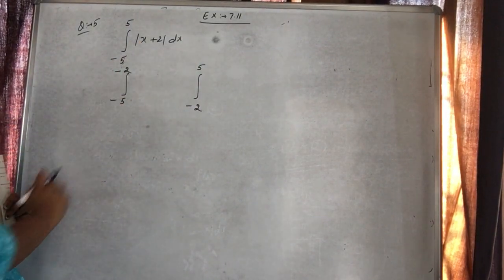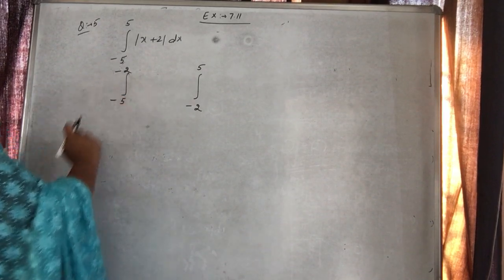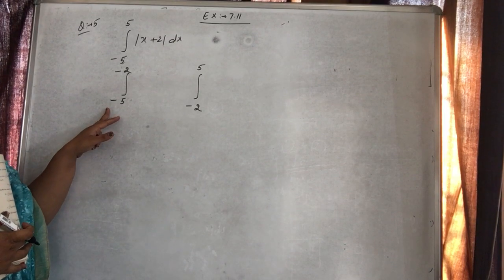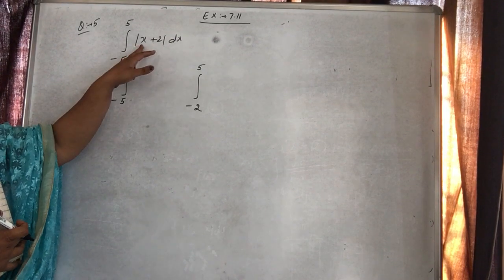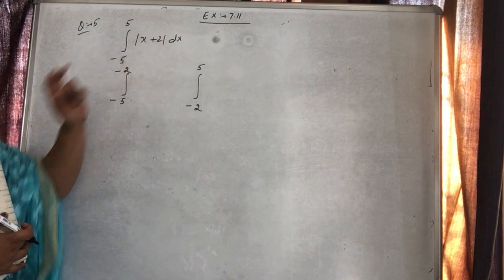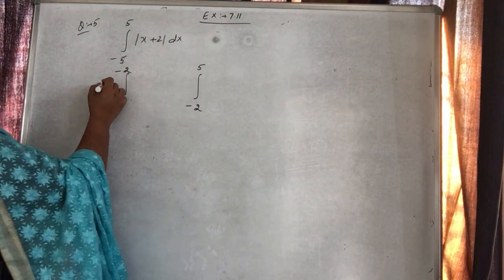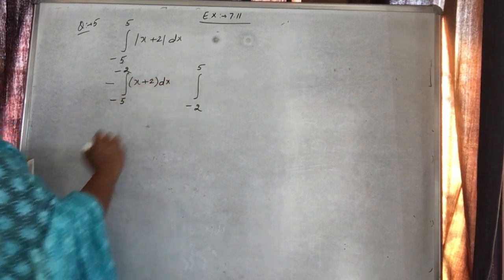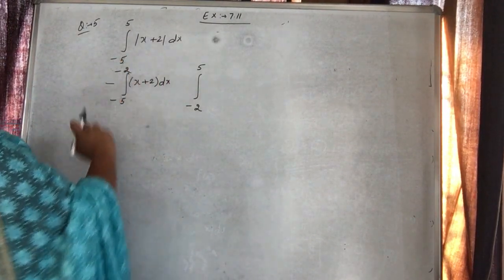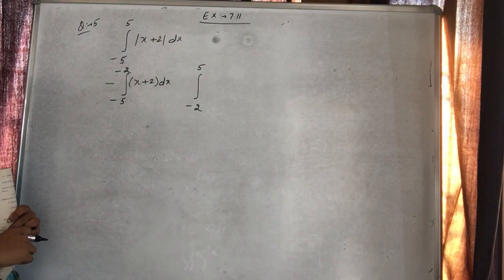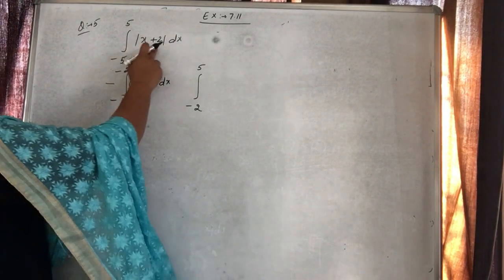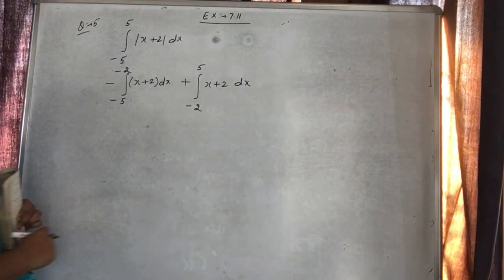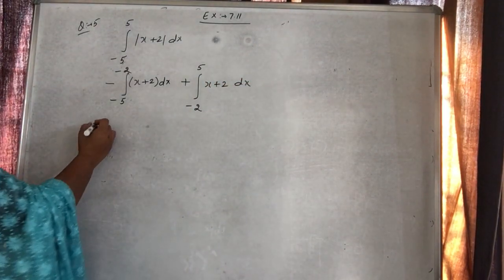Minus 5 se minus 2 ke beech ki koi bhi value dalein — maan lo minus 3 daal di: minus 3 plus 2 = minus 1. Function negative aa raha hai, toh bahar minus laga kar function as it is likhein. Minus 2 se 5 ke beech ki value — minus 1, 0, 1, 2, 3, 4 kuch bhi dalou — function positive aa raha hai, toh function as it is. Now we have to integrate that function.